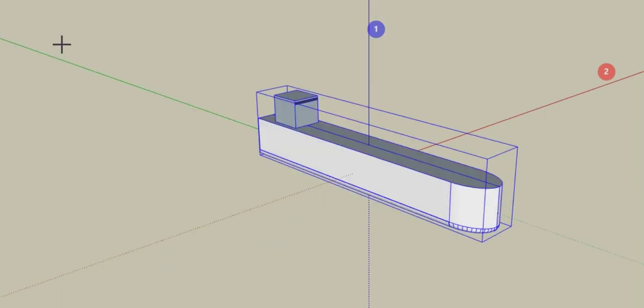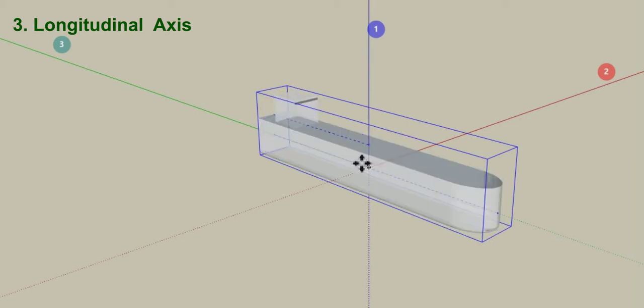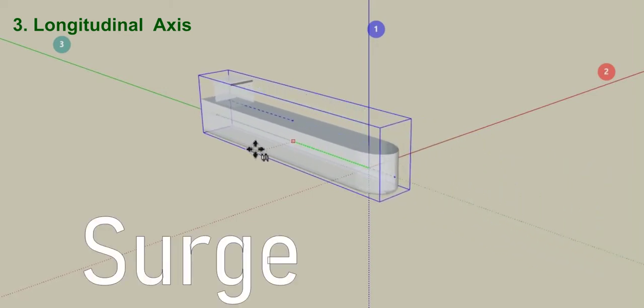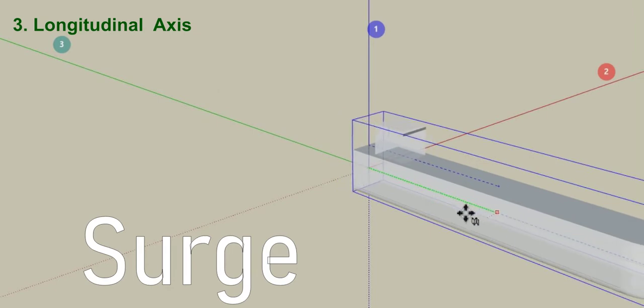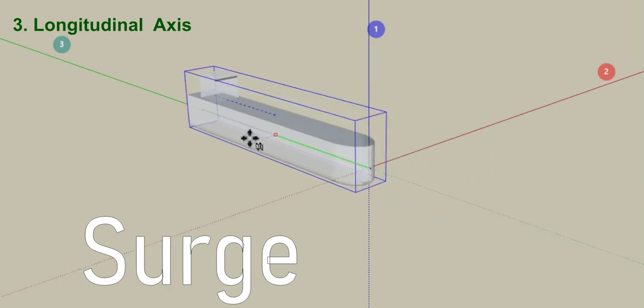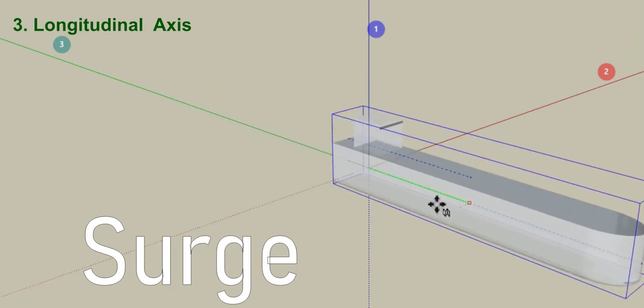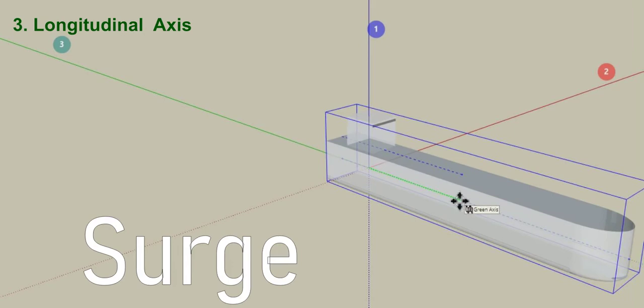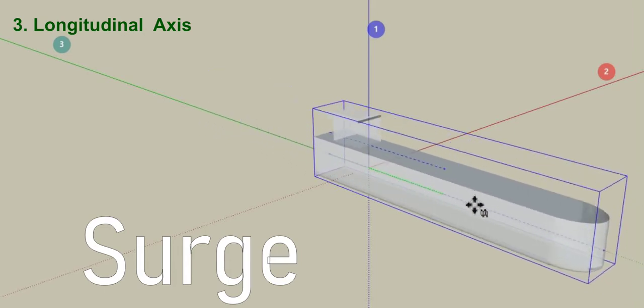Our third and final axis of motion is the green line here. That is the longitudinal axis. We're seeing bodily motion along the green axis. This is surge. Ship is sliding forward, sliding backward, forward, backward in a bodily fashion. No rotation. This is just sliding along the green longitudinal axis. This is surge.